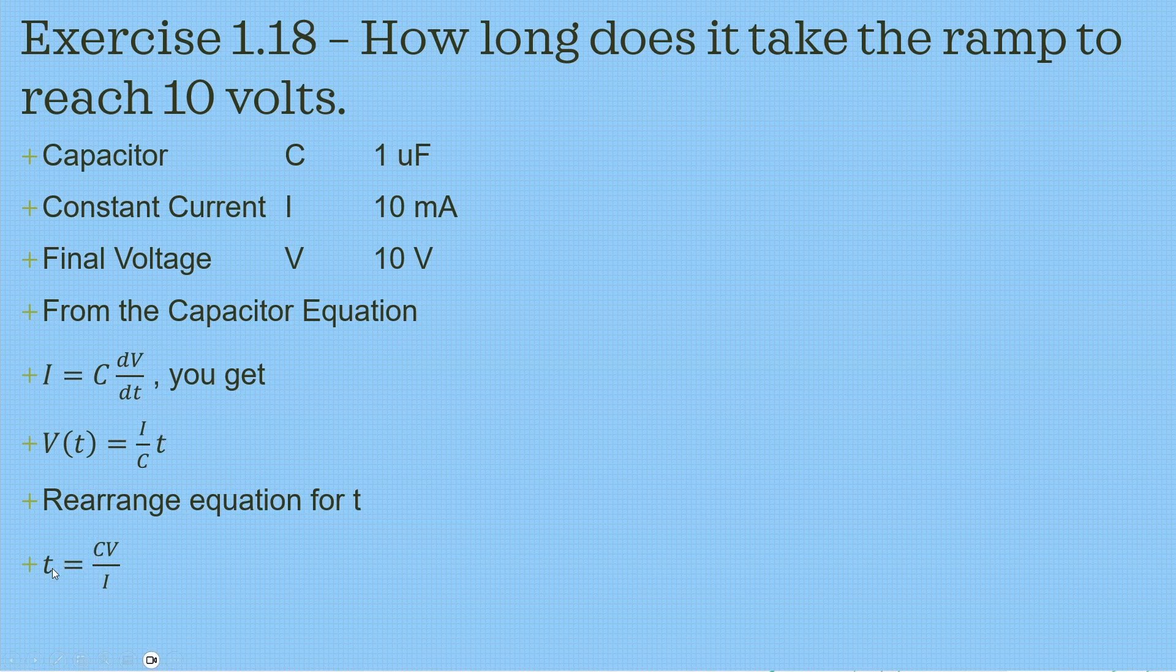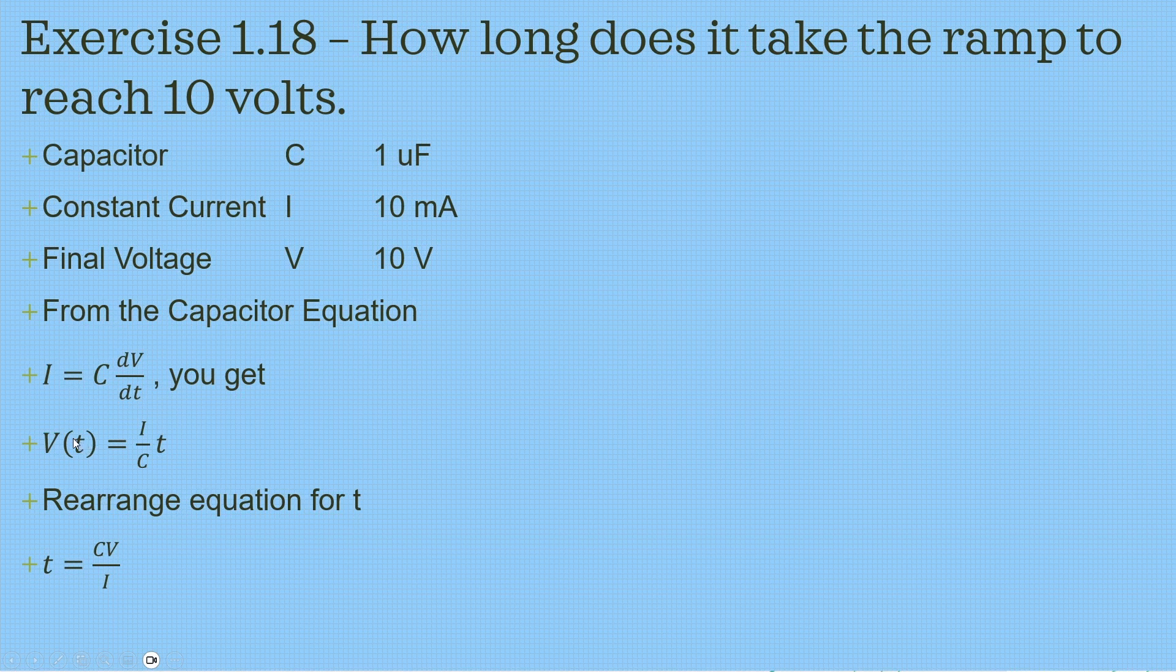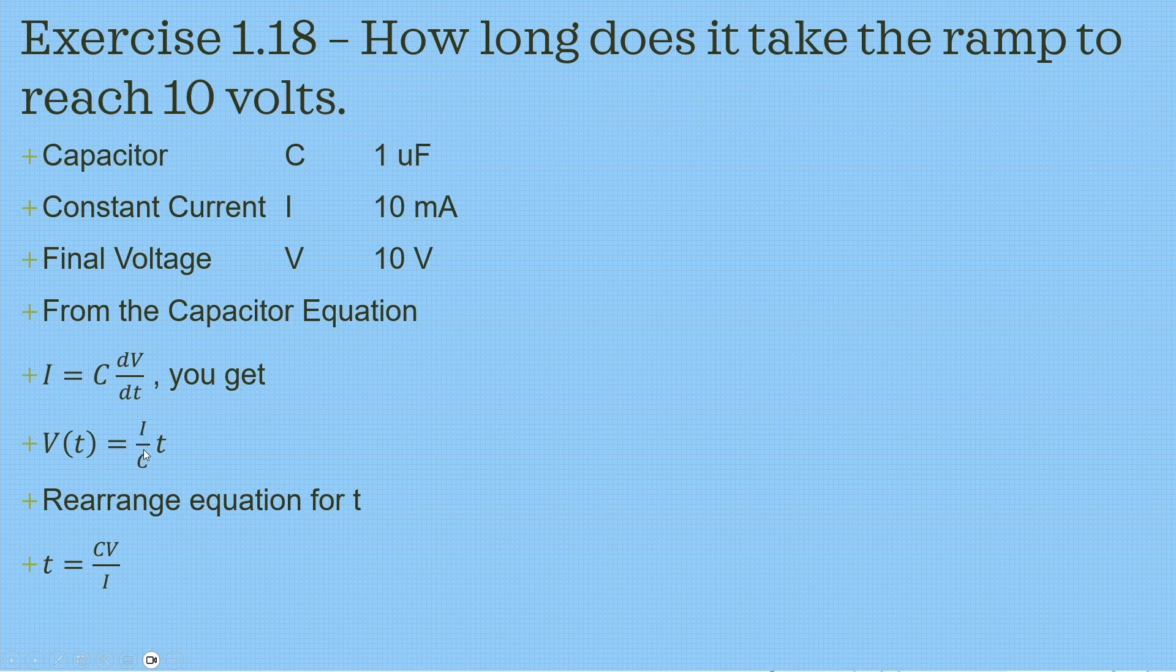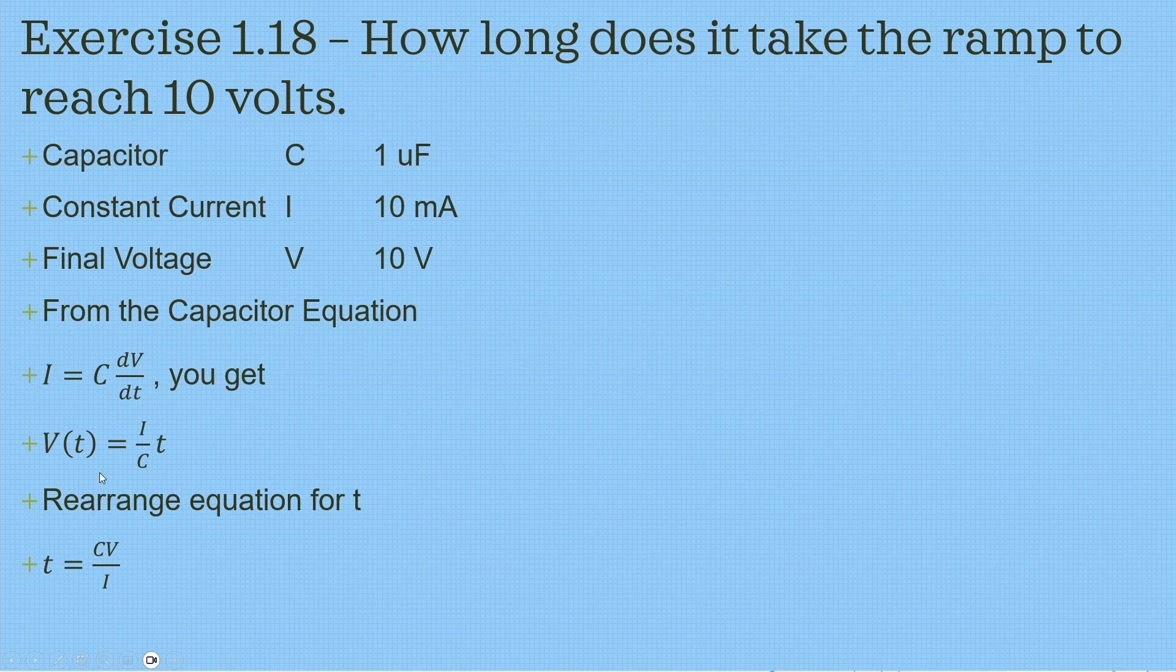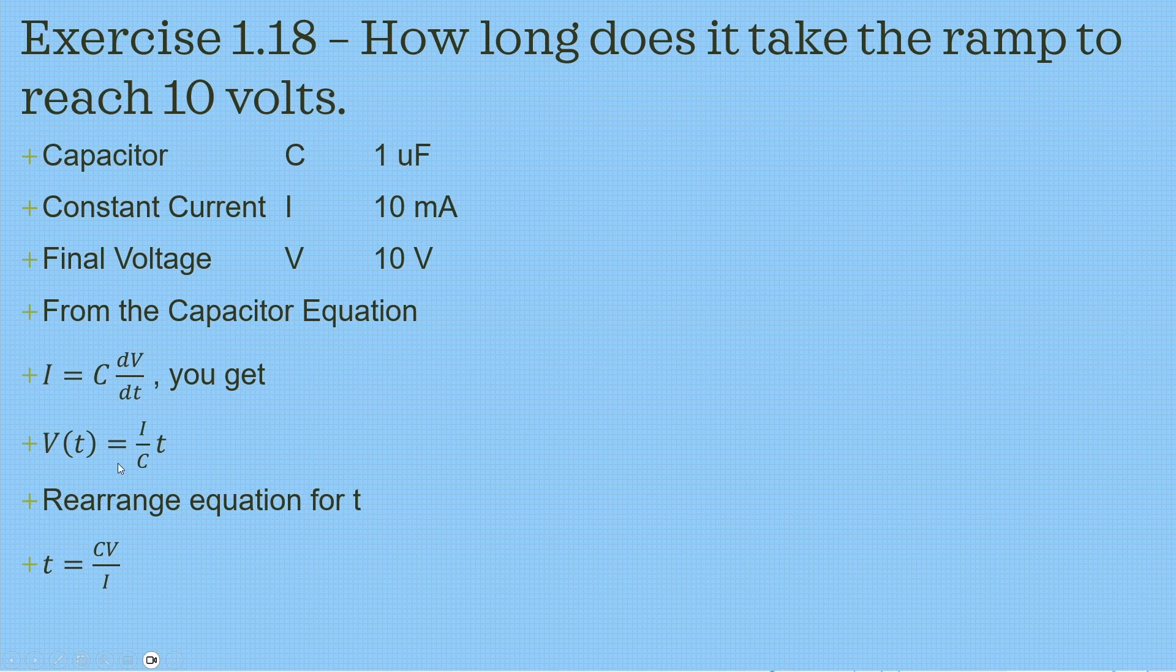So what we are doing to get this is basically we are dividing both sides by T. So we get V over T equals I over C. Then we can divide both sides by V and get 1 over T equals I over C V. Now if you do the inverse of that, we get T equals C V over I.